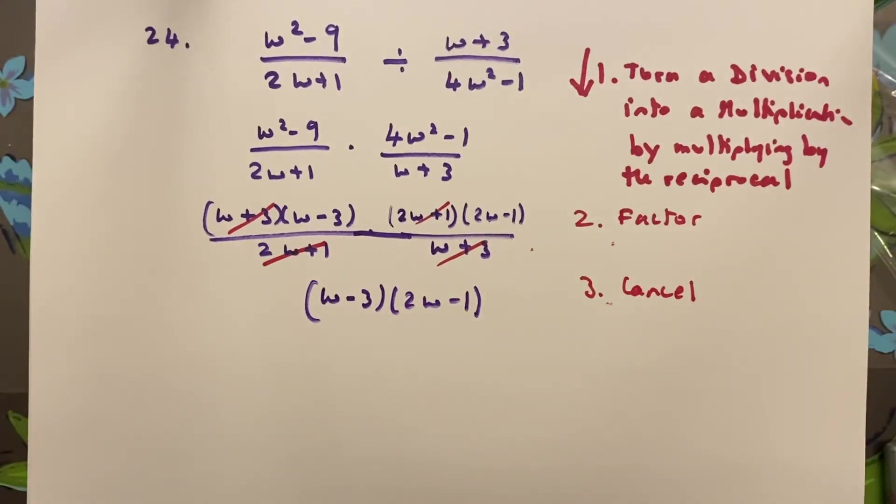So that is the end of 12.5, multiplying and dividing rational expressions. I've got two sessions left and then we'll be done with our review.